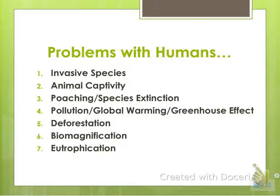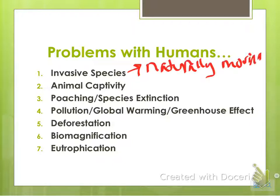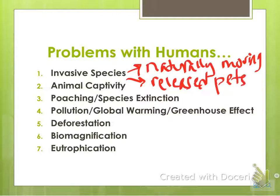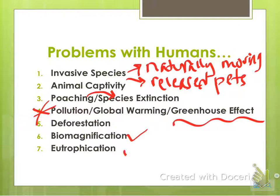So here are some problems with humans. We have invasive species, which can either come from naturally moving or hitching a ride on a boat or plane, or from released pets. Animal captivity is contributing to the endangerment problem, and there are more and more animals not being in their natural environment, which ruins the ecosystems that need those animals to function. Poaching leads to species extinction. The big one is pollution, global warming, and the greenhouse effect. Deforestation is just clear-cutting your forests. And then you have biomagnification and eutrophication, which we will discuss in detail.